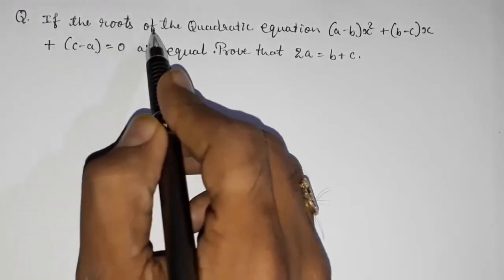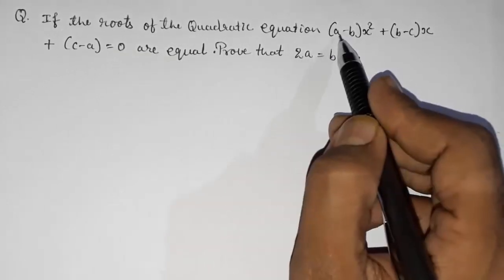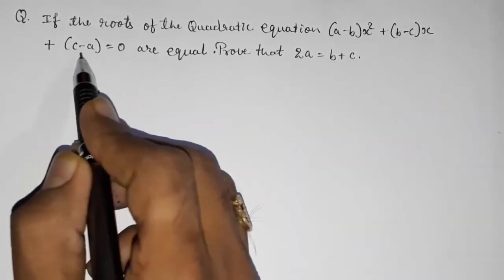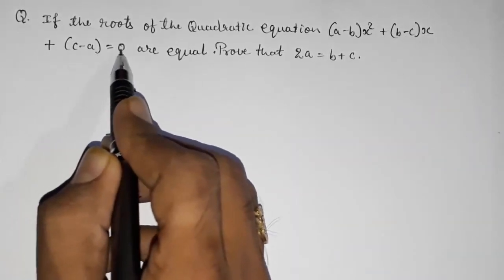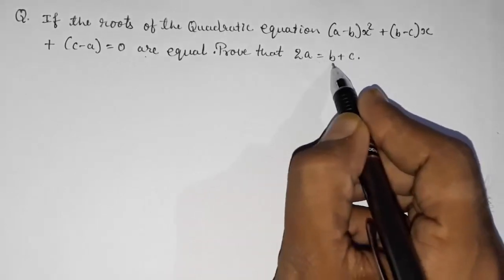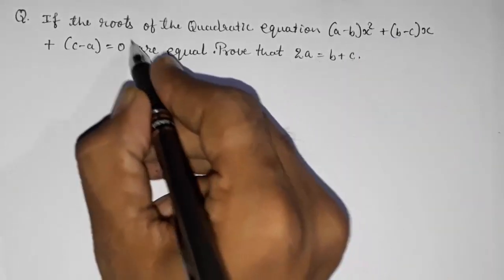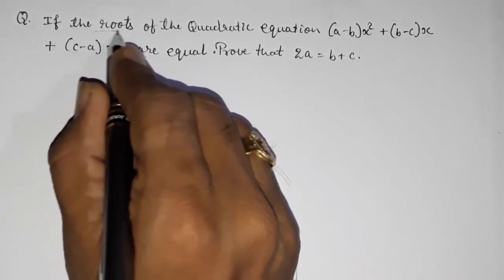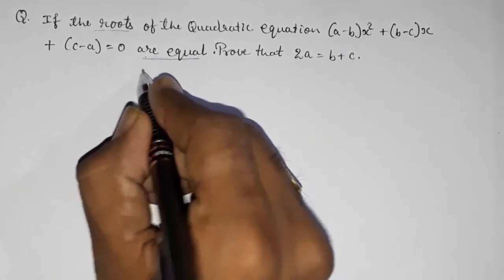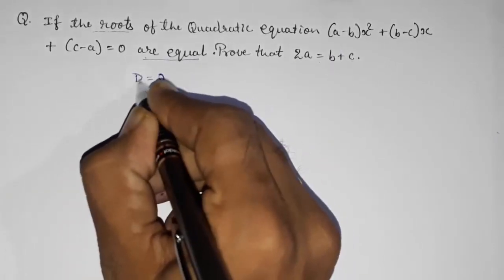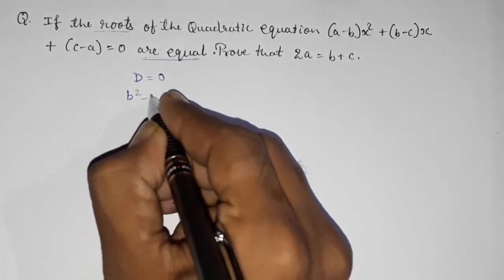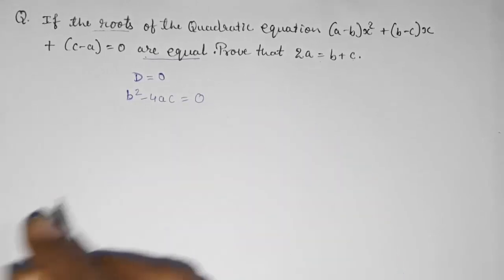Look at question number 1: if the roots of the quadratic equation (a minus b) x squared plus (b minus c) x plus (c minus a) equals 0 are equal, prove that 2a equals b plus c. Whenever they tell you that the roots of a quadratic equation are equal, you have to use that the discriminant is 0.